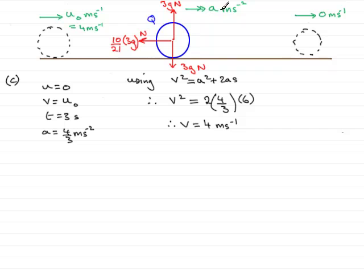So, we now move on then to get this acceleration by resolving. Resolving in the direction of motion which is to the right, so that is the positive sense. So, resolving to the right, we have got this force which acts in the negative sense, so that will be minus 10 over 21 multiplied by 3G. That's the mu R, is equal to the mass, and the mass of Q was 3 kilograms, so that's going to be 3 times the new acceleration A.